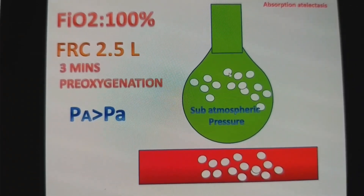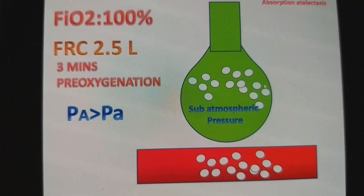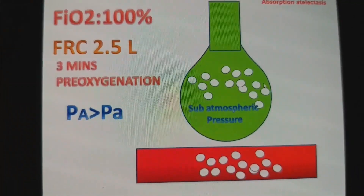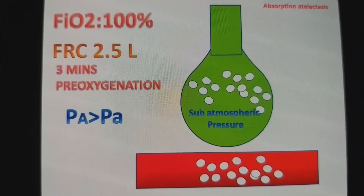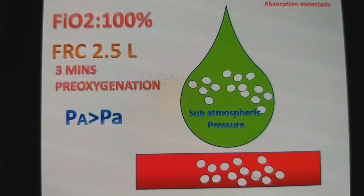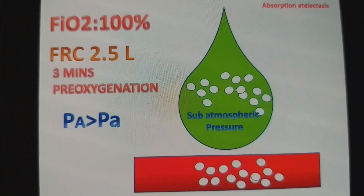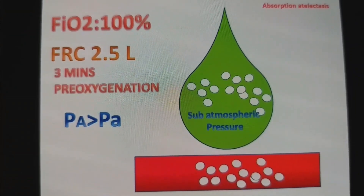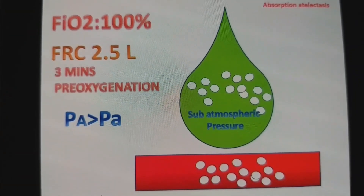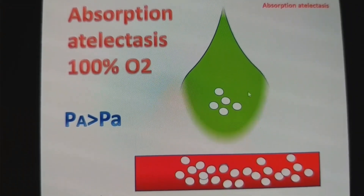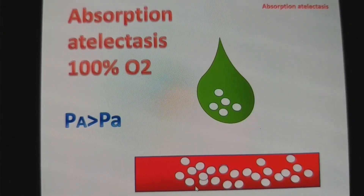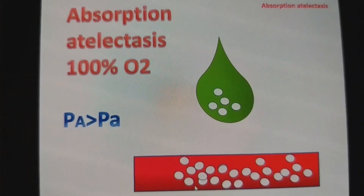This creates a negative intrathoracic — sub-atmospheric — pressure inside the alveoli. Because of this negative pressure, the alveolar walls appose. Oxygen becomes trapped inside the alveoli again, and again there is a partial pressure gradient which leads to passive diffusion of oxygen molecules into the blood vessel. Eventually this alveolus collapses.